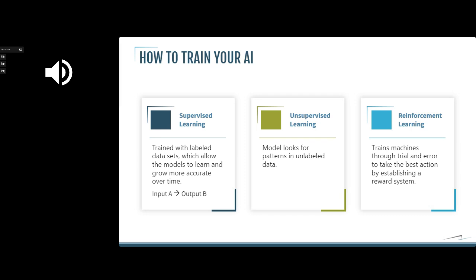Supervised learning trains with labeled data sets and allows models to learn and grow more accurate over time — essentially you've got an input A and an output B. For example, language translation: I'm typing a word in one language and getting something back in another language. That's supervised learning — getting those labeled data sets and working within them.